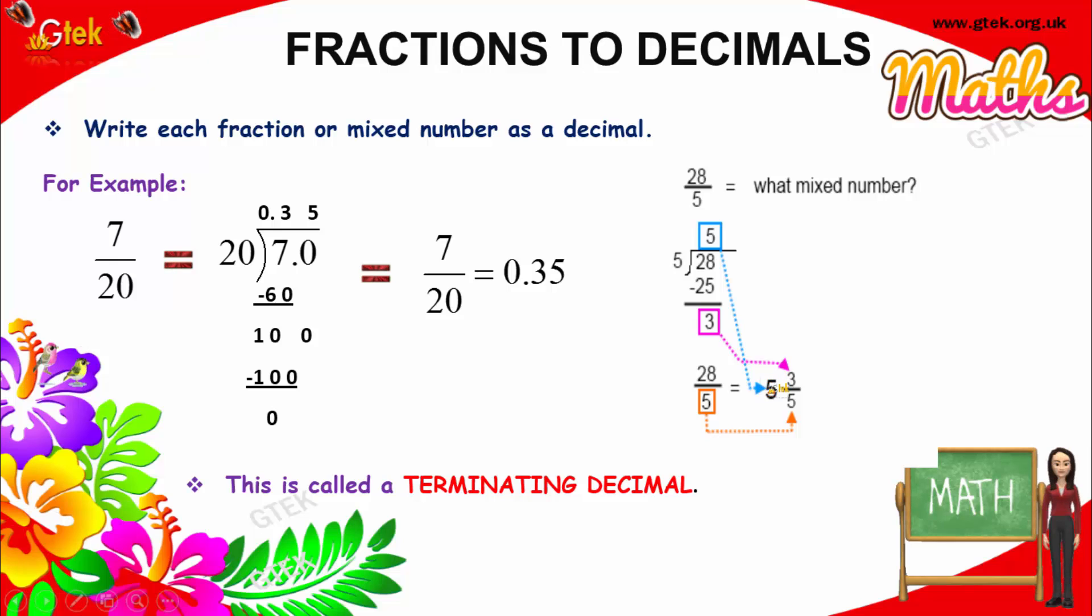As here, 5 and 3 divided by 5. That's your mixed number, 5 and 3/5.